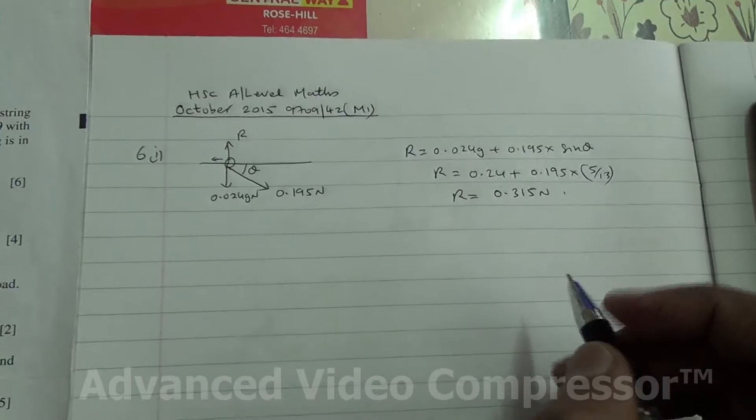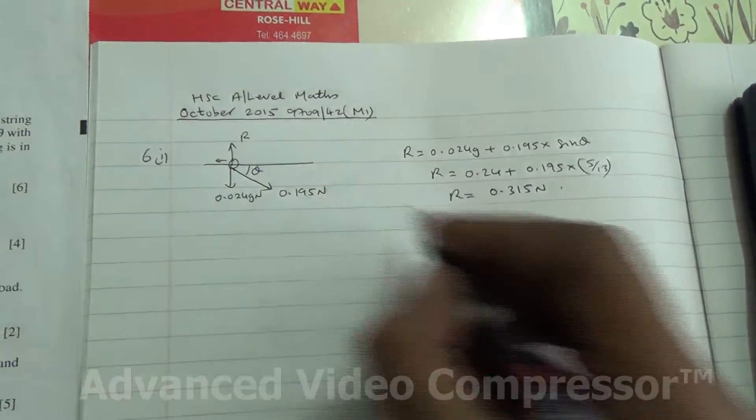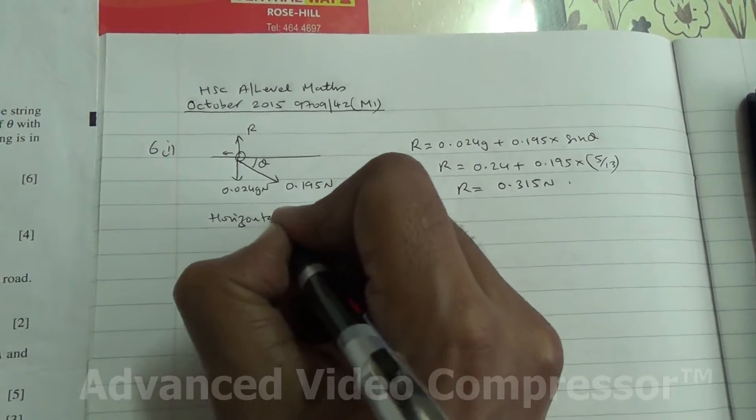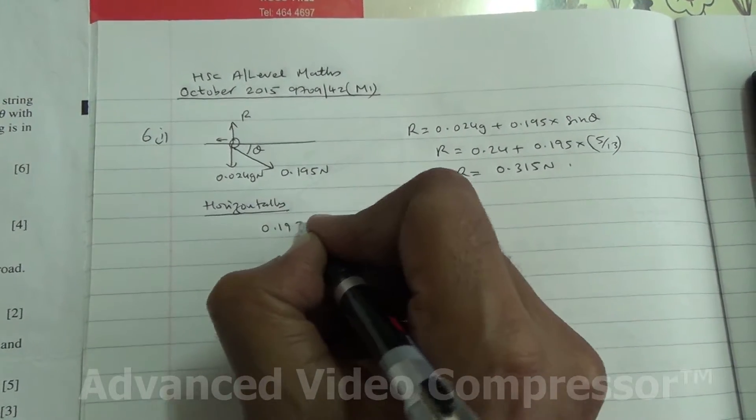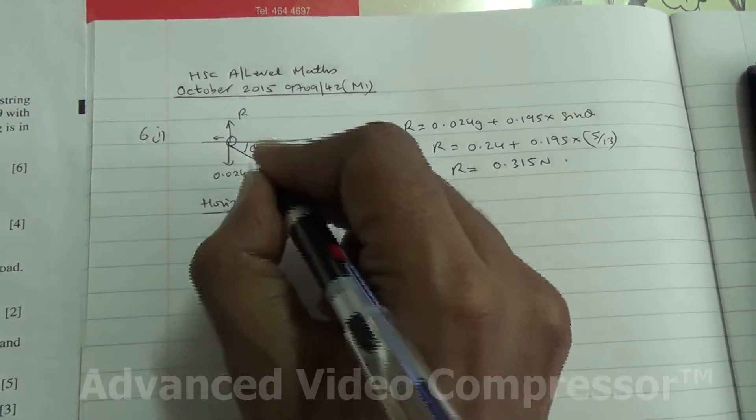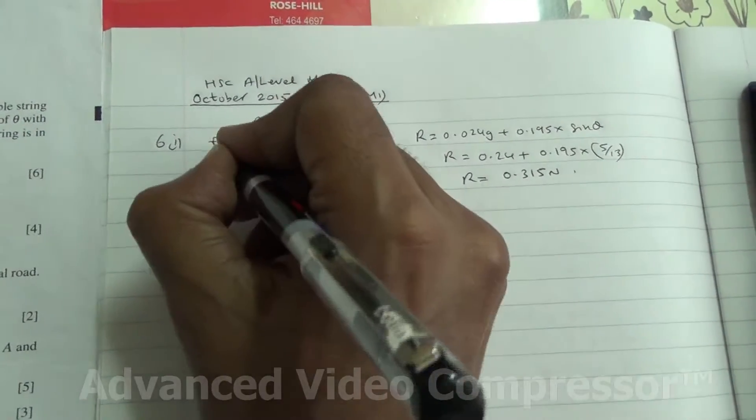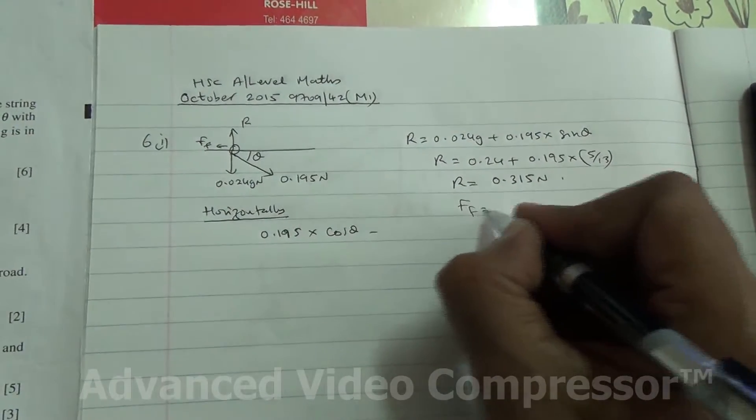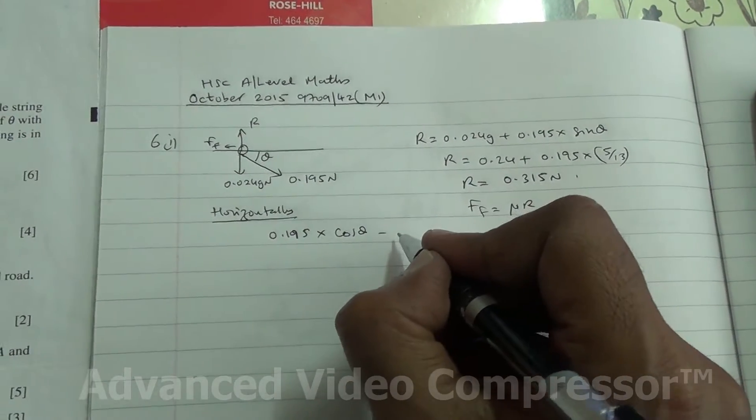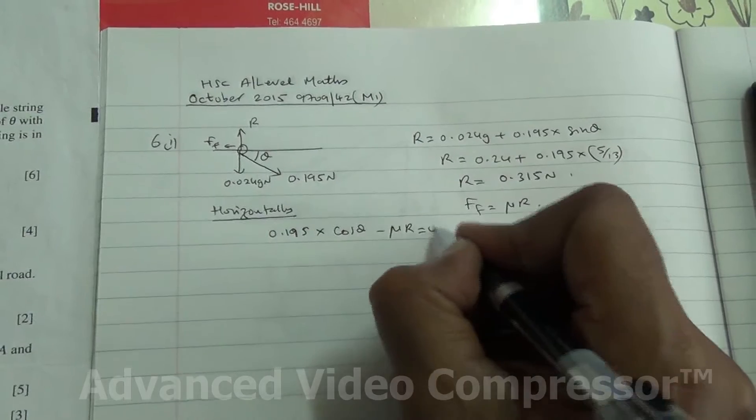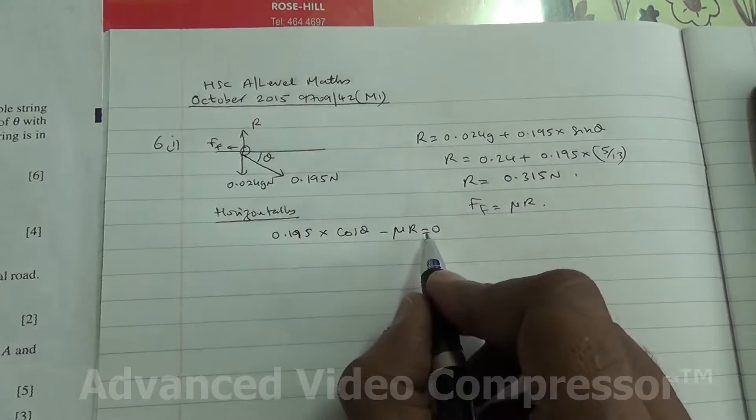Okay, now that we know this, we can resolve horizontally. What if we do that? So horizontally, we have 0.195 times the cos of the angle, cos of theta, minus the force of friction. What is the force of friction? Force of friction is mu R, basically. So minus mu R is equal to 0. Because this is limiting equilibrium, that's why it is equal to 0.